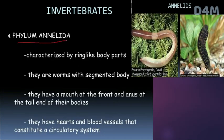The next phylum is Annelida. They have ring-like body parts and a ring-like segmented structure. They are worms with a segmented body, as you can see in the picture. They are segmented, have a mouth, anus, and a well-developed circulatory system.